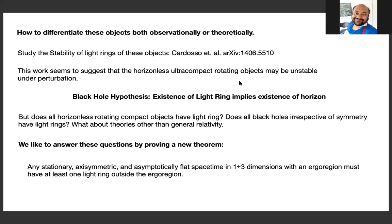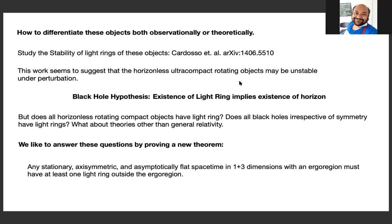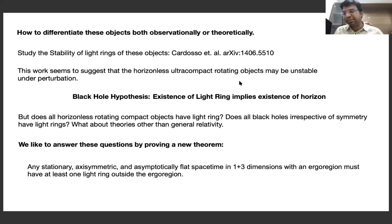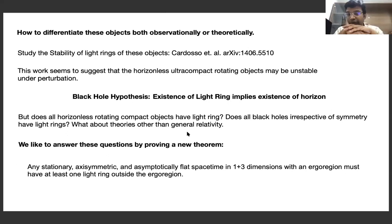The black holes are not unstable; the horizonless ultra-compact rotating objects are unstable as long as they have a particular kind of light ring. This result is independent of the coordinate system. Important questions include: whether all horizonless rotating objects have light rings, whether all black holes have light rings irrespective of symmetry, and whether these results hold in theories beyond general relativity.